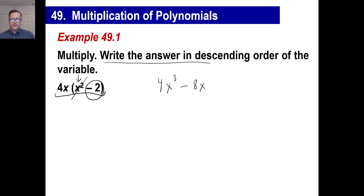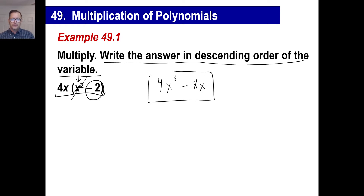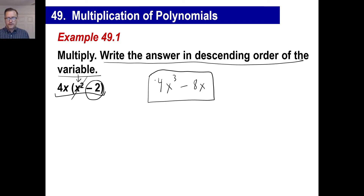They will often tell you to write this in descending order of the variable — putting the highest exponent first: x to the third, then x to the first. Eventually, we'll look at something like this and pull out the greatest common factor, which will be 4x. You'll look at this problem and they'll tell you to factor it.